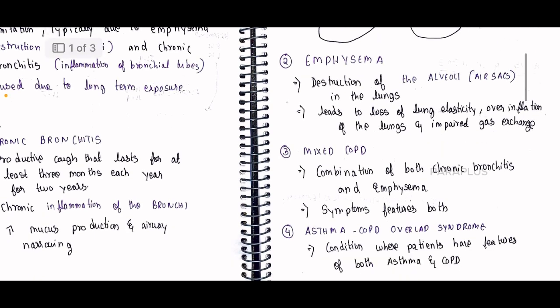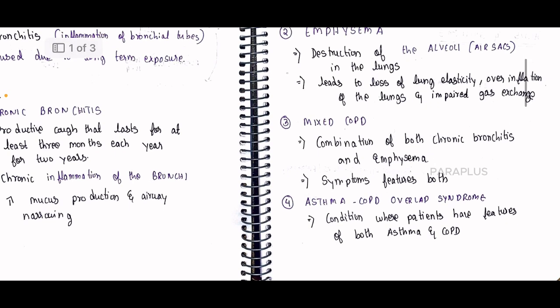There is also mixed COPD — two conditions, emphysema and chronic bronchitis, together. There is also a condition where patients have features of both asthma and COPD, called Asthma-COPD Overlap Syndrome.